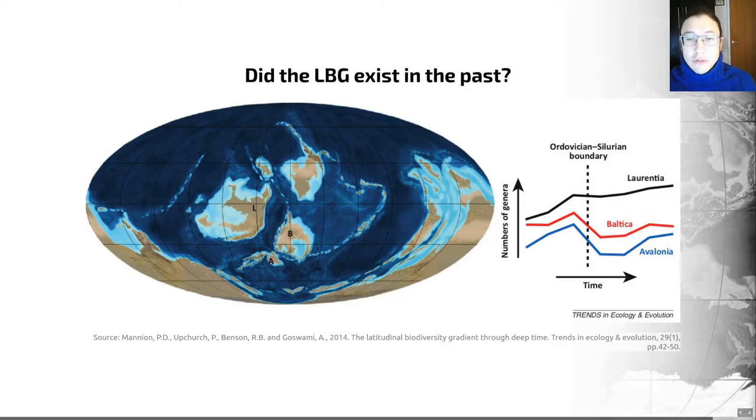As a result, after the Ordovician-Silurian extinction into the Silurian, you see a far more pronounced latitudinal biodiversity gradient. It's also interesting, I think, to note that post-extinction diversity recovers far more rapidly in Laurentia than it does elsewhere. So that is an interesting observation.